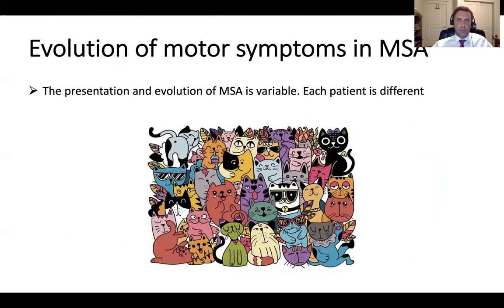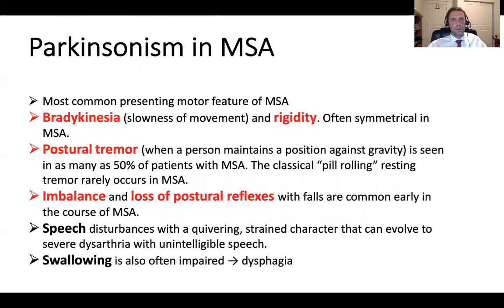The presentation and evolution of MSA is extremely variable and each patient is different. Parkinsonism is the most common presenting motor feature of MSA. It is defined by the combination of bradykinesia — which is a mandatory feature meaning slowness of movement — along with rigidity, tremor, and postural and gait impairment.